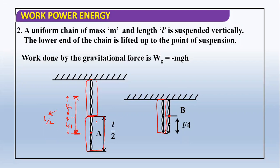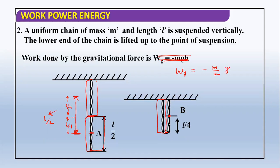The height moved for this lower part of chain is l by 2. You have to consider the central point because some points may go larger height and some smaller — this end stays at the same point, but this end touches the roof, changing height by l. But the central point has shifted by a height l by 2. The mass of this part is m by 2, so work done by gravity is minus (m/2) × g × (l/2).